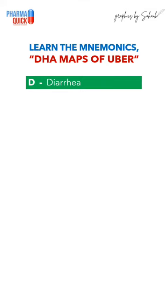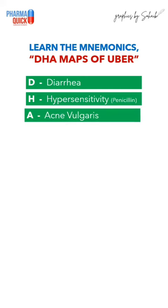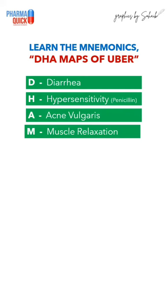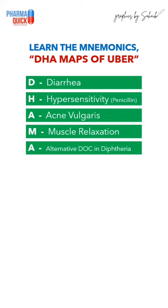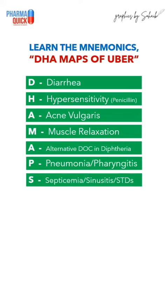D in DHA stands for diarrhea, H stands for hypersensitivity alternative to penicillin, A stands for acne vulgaris, M stands for muscle relaxation, A for alternative drug of choice in diphtheria, P for pneumonia and pharyngitis.